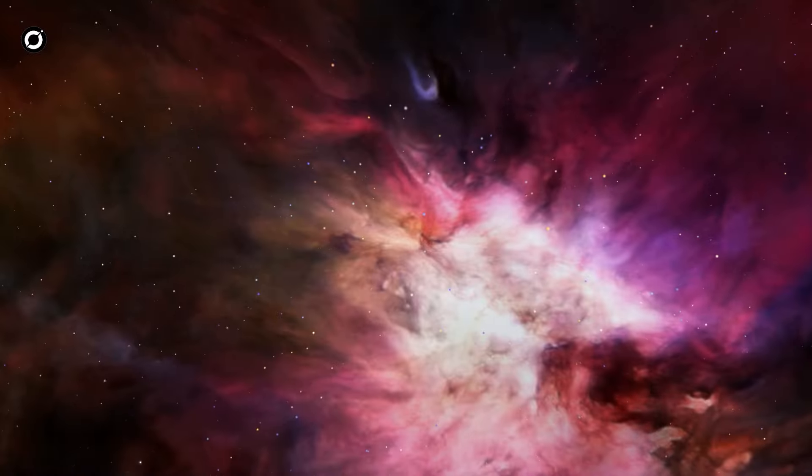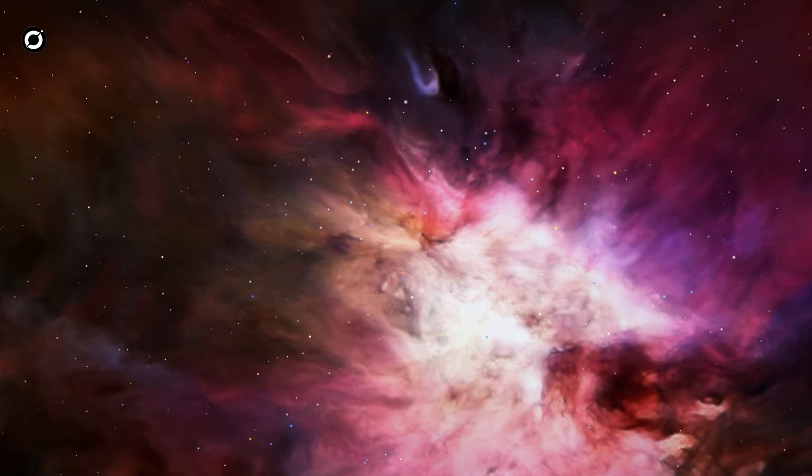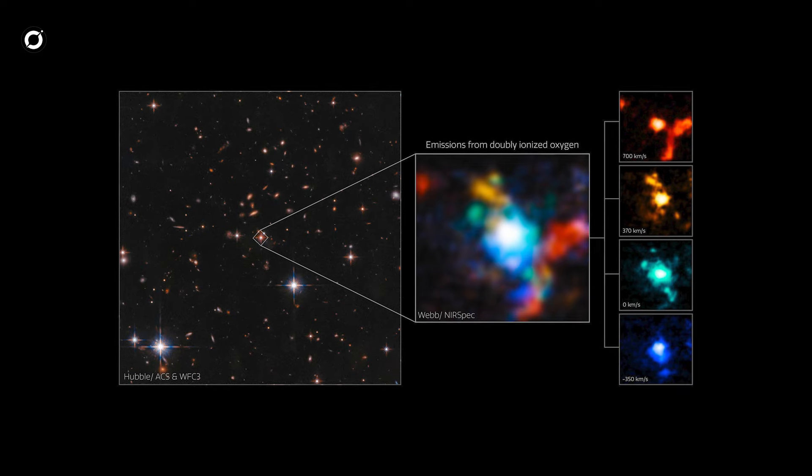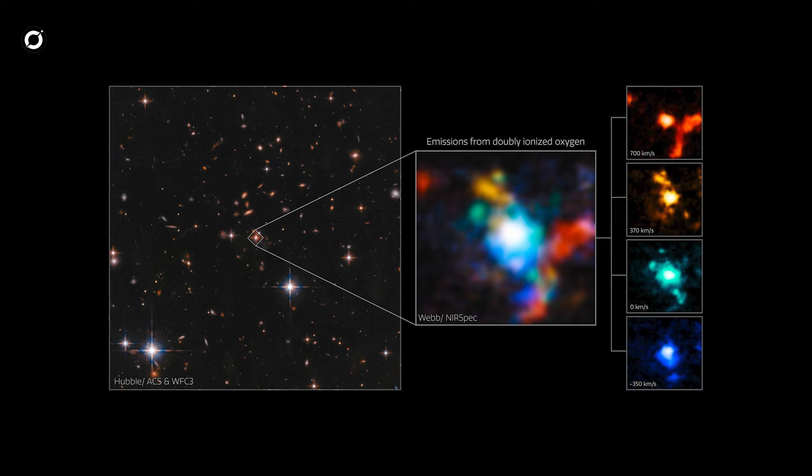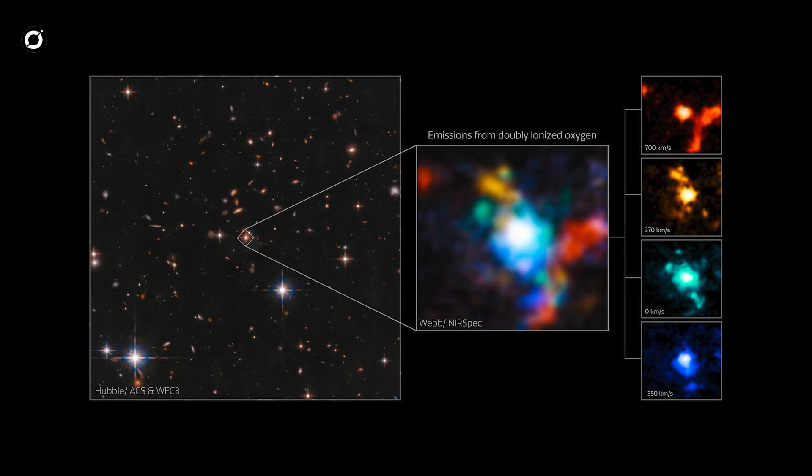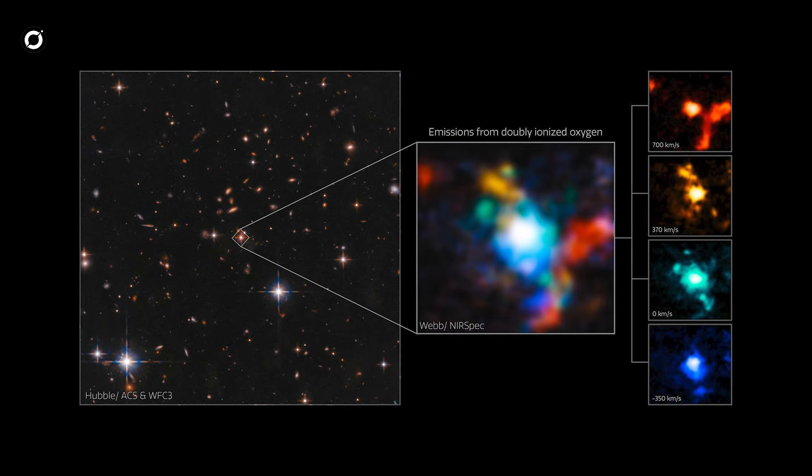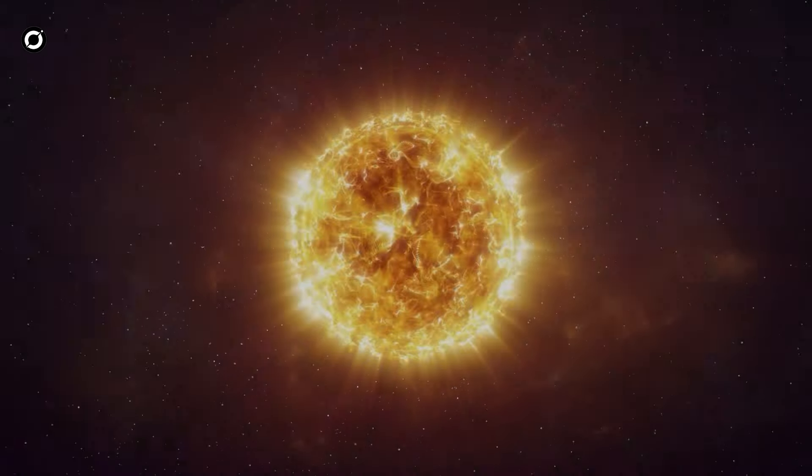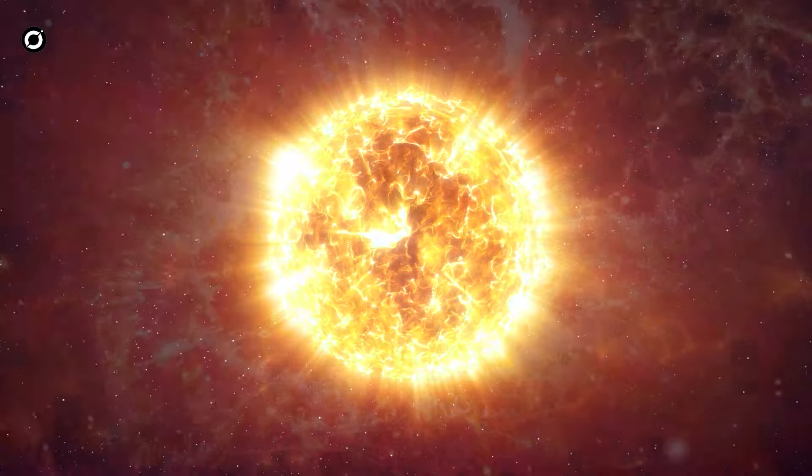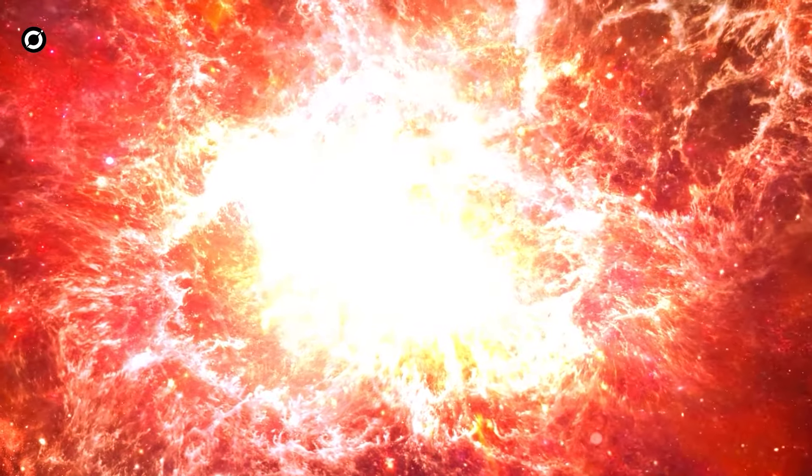These extreme emission lines are actually known to be relatively common in the early universe post-Big Bang. Almost every single galaxy that has been found so far shows these unusually strong emission line signatures, indicating intense recent star formation. These early galaxies were very good at creating hot, massive stars.